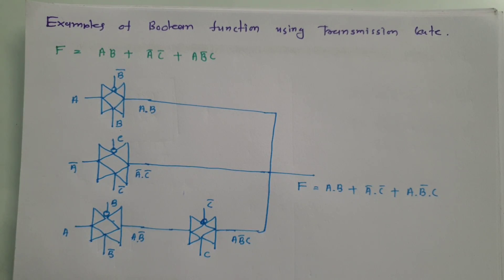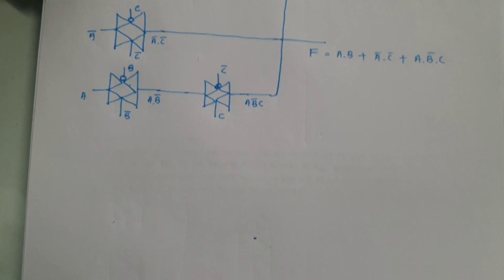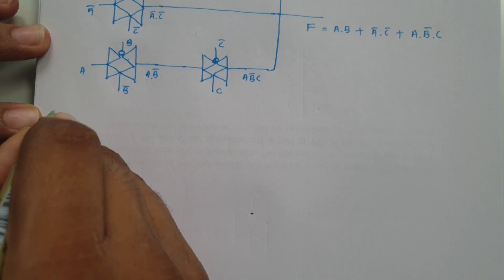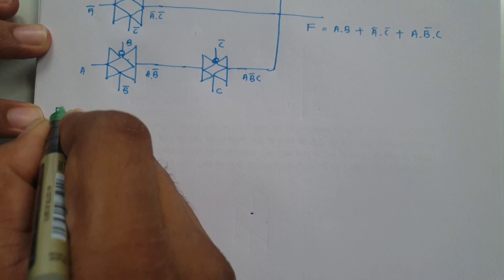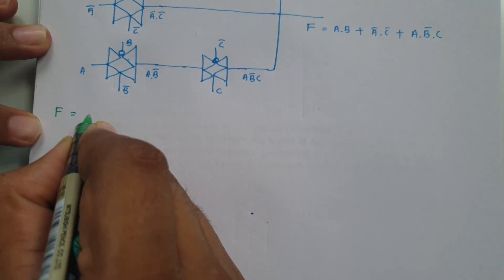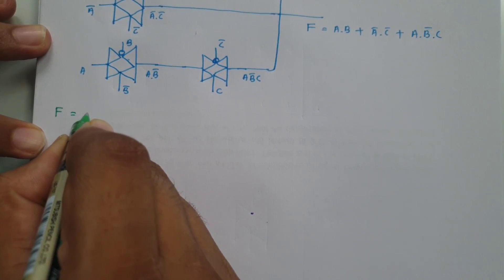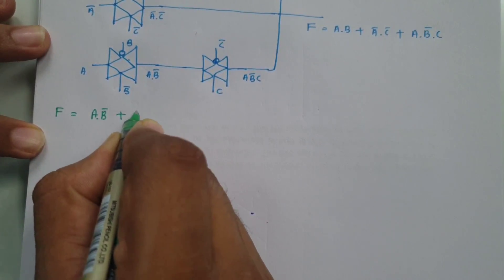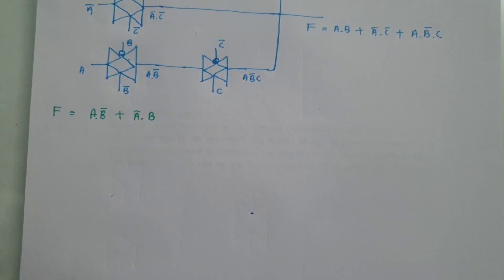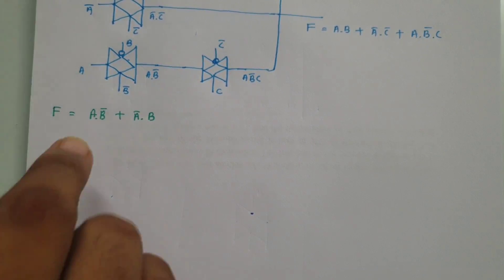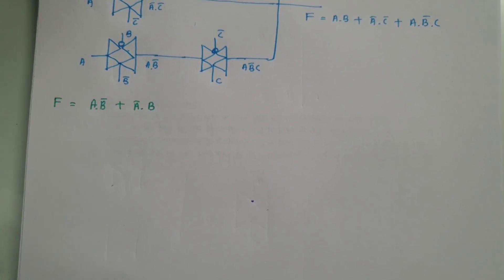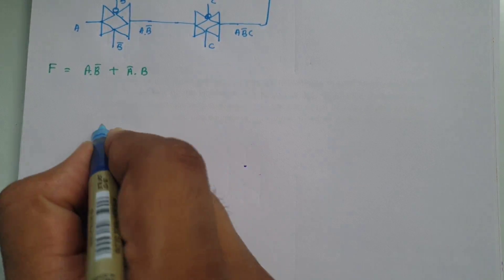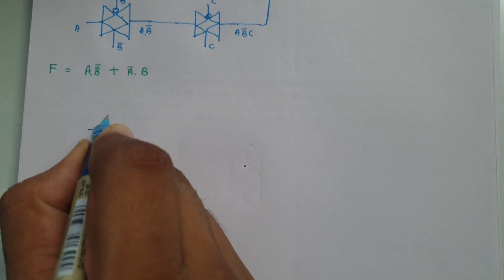Let me give you a second question. The second question is forming an XOR gate using a transmission gate. The XOR gate function is a·b̄ + ā·b. So how do we form this function using transmission gates? There are two product terms, so let me draw two transmission gates.